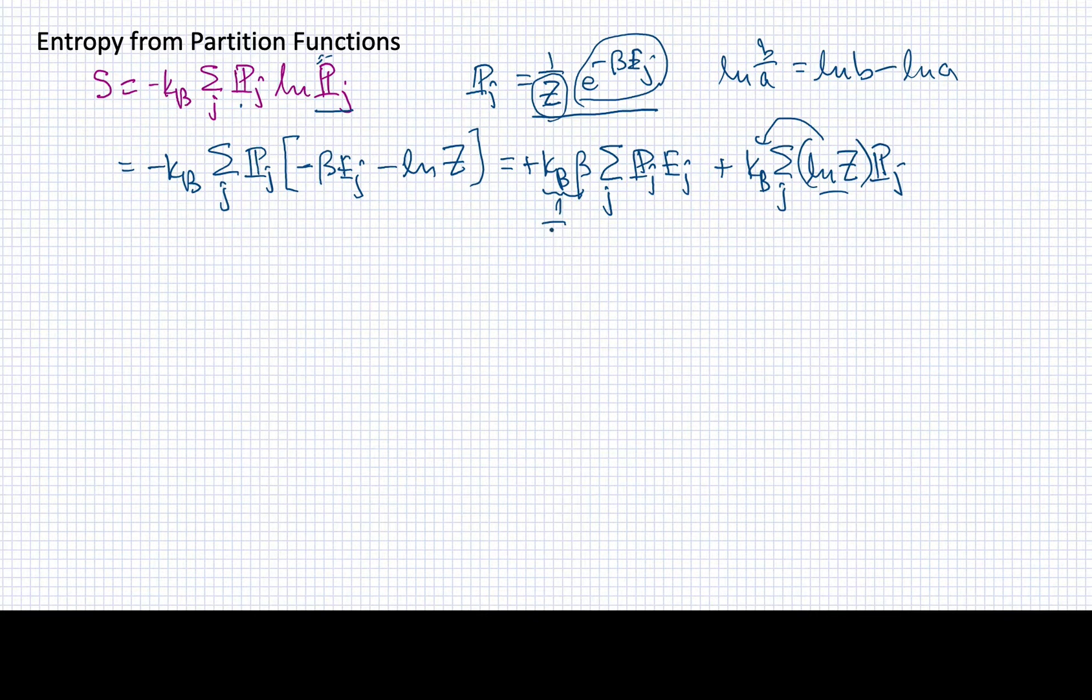What I have here otherwise is the probability of the jth state times its energy. So I've calculated here the average energy of this system. I'll write that out more formally as the average energy divided by temperature.